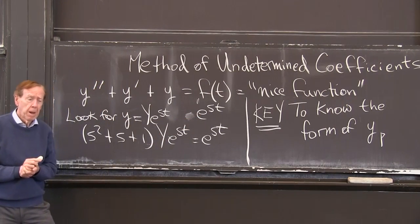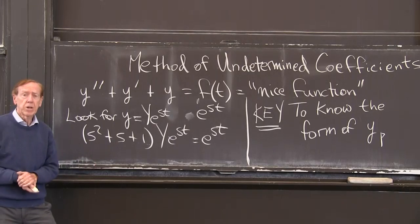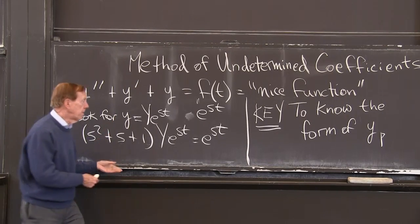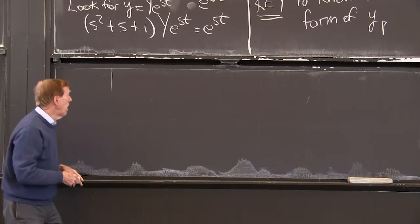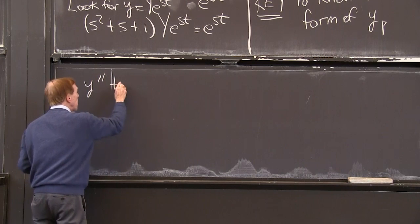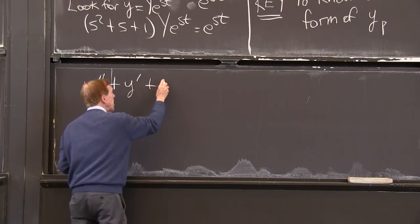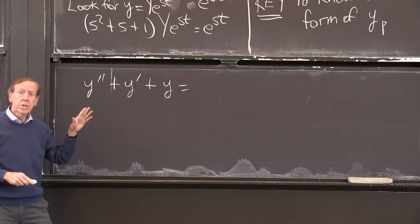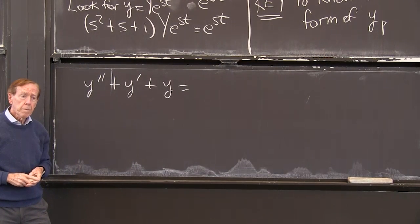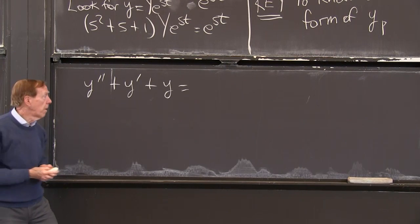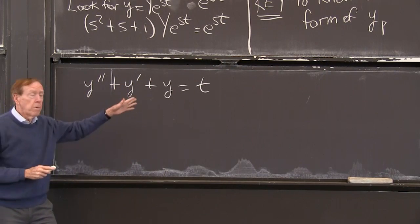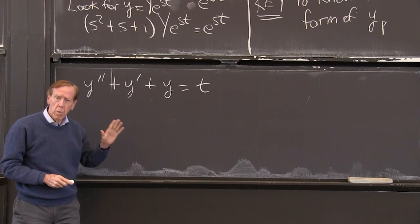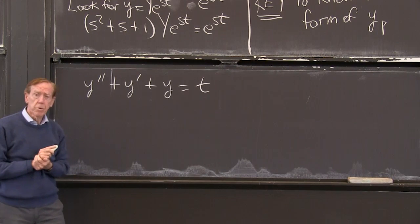So that's a nice function, then. e to the st is a nice function. What are the other nice functions? Let me move to the other board and ask what other right-hand sides could we solve. So I'll keep this left-hand side equal to... e to the st was 1. What about t? A polynomial. Well, that only has one term.